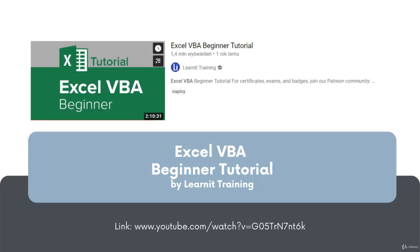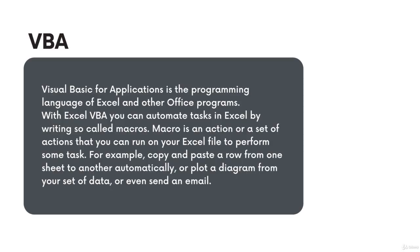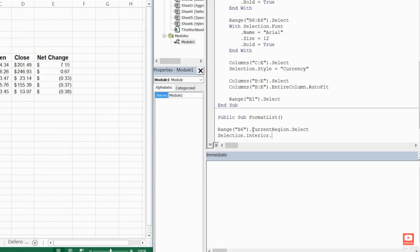After you have a good knowledge of Excel, take a step and learn VBA, because that is actually the first automation language you will for sure use as an RPA developer. I recommend the Excel VBA beginner tutorial by LearnItTraining. VBA is the programming language of Excel and other Office programs. With Excel VBA you can automate tasks in Excel by writing so-called macros. A macro is an action or a set of actions that you can run on your Excel file to perform some tasks.